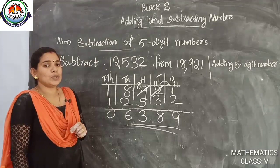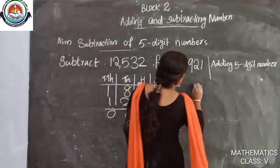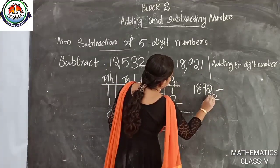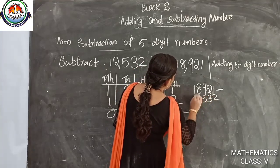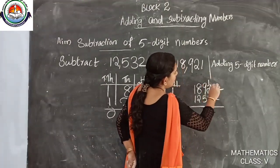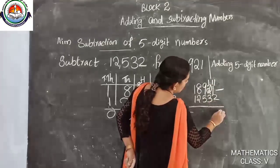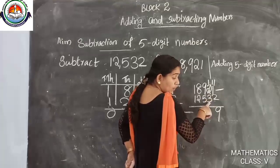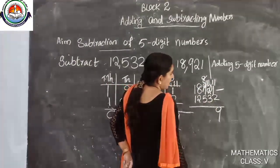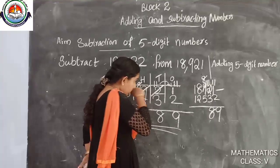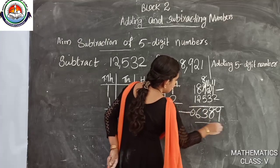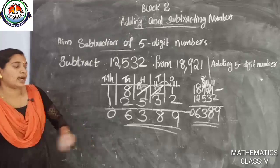Now without the place value chart: 18,921 minus 12,532. We take 1 from the tens place 2, which becomes 1. Ones place becomes 11. 11 minus 2 is 9. 1 minus 3 is not possible, so take 1 from the 9 in hundreds; 9 becomes 8, tens becomes 11. 11 minus 3 is 8. 8 minus 5 is 3. 8 minus 2 is 6. Ten-thousands: 0. The answer is 6,389.